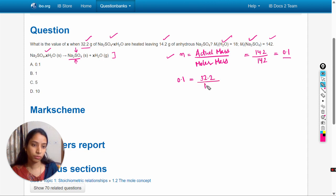So we can write here: 0.1 equals actual mass 32.2 grams divided by molar mass. Molar mass will be 32.2 divided by 0.1, which equals 322 grams per mole. So now we know the molar mass of this moiety.